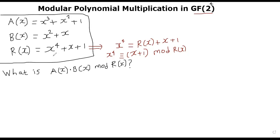One thing I'd like to clarify before going to the algorithm: in this example, r(x) is the reducing polynomial x⁴ + x + 1. Since plus and minus are the same in Galois field, I can rewrite this as x⁴ = r(x) + x + 1. If I apply mod r(x) on both sides, r(x) goes away, and you're left with x + 1 as the remainder. So the highest degree term is congruent to the remaining terms mod r(x) — an important fact we will leverage for the algorithm that computes a(x) × b(x) mod r(x).